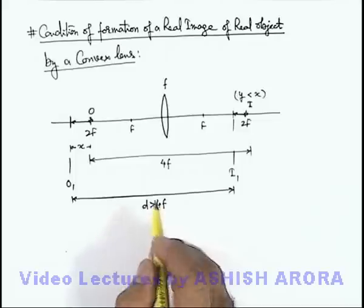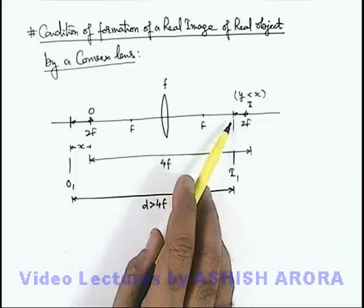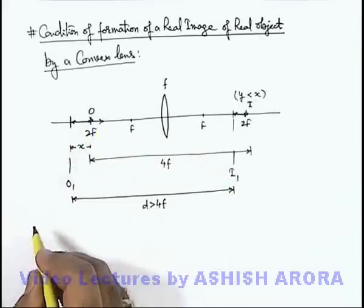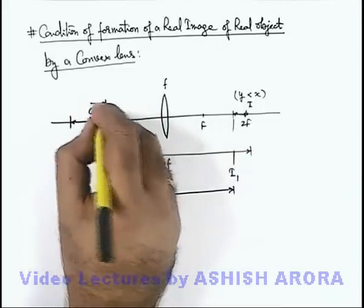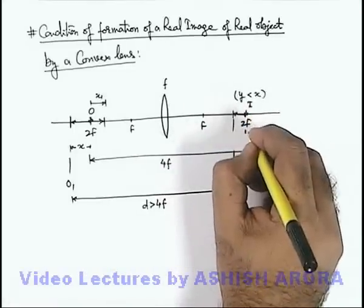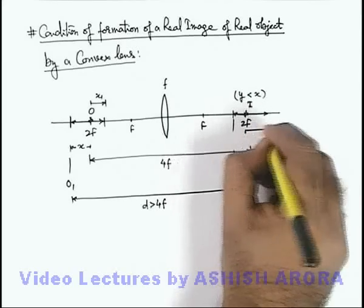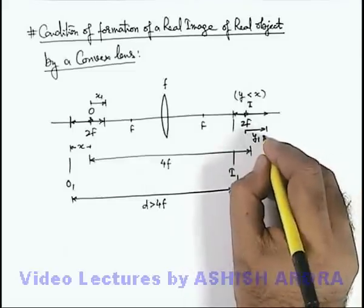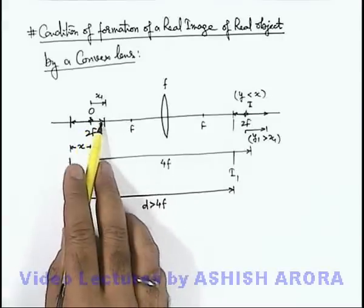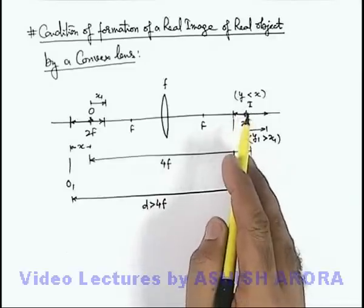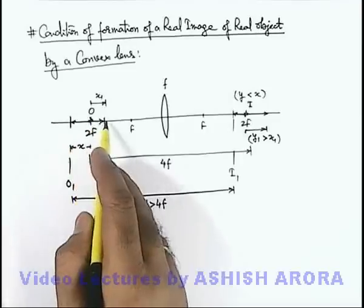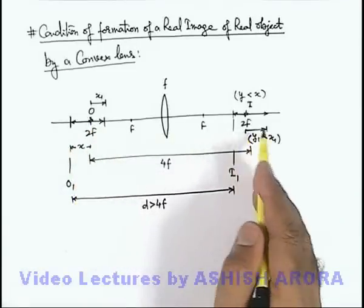Now let's understand the phenomena by displacing the object toward the right side. If it is displaced to the right by a distance x1 from its initial position, the image will also be displaced toward the right by a distance y1. But here, y1 will be greater than x1, because object positions between 2f and f on one side are mapped to image positions from 2f to infinity on the other side.